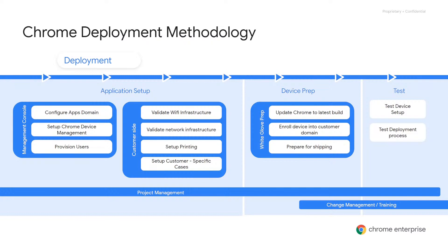As far as device prep goes, there are a few different ways that organizations go through device prep. They might have something called white glove prep, which helps update Chrome to the latest build and rolls devices into a customer domain, preparing for shipping to the different locations. Some of you may or may not be using partners for your deployment, and that is also another factor to take into consideration as another piece of the puzzle that your deployment team will be working through.